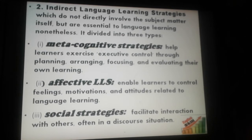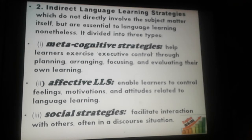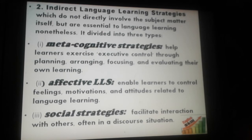The last strategy is social strategies, which facilitate interaction with others, often in discourse situations. This strategy helps learners to integrate into a new society and interact with others easily. So there are two types: direct language learning strategies, which involve the language or subject matter directly, and indirect language learning strategies, which are essential to language learning even though they don't directly involve the subject matter.